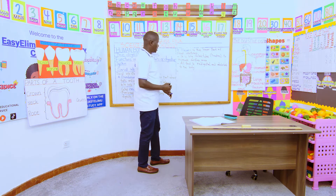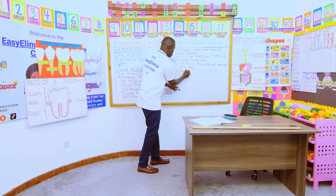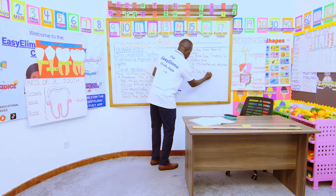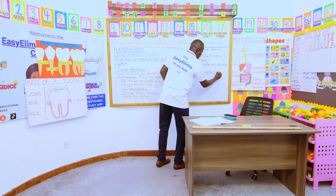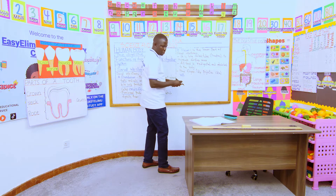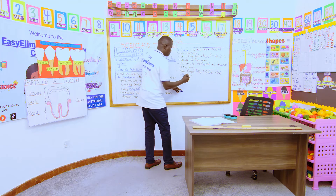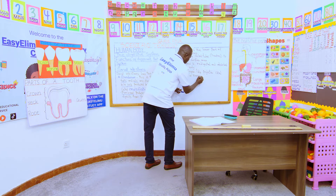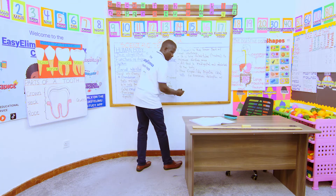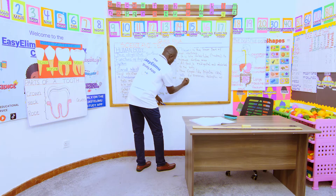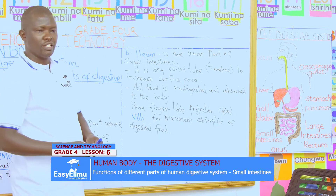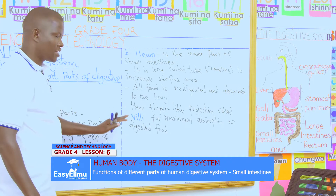What makes absorption easy? The small intestines have finger-like projections called villi. The reason why they are finger-like is to maximize absorption of digested food. And digestion of food ends at this point.